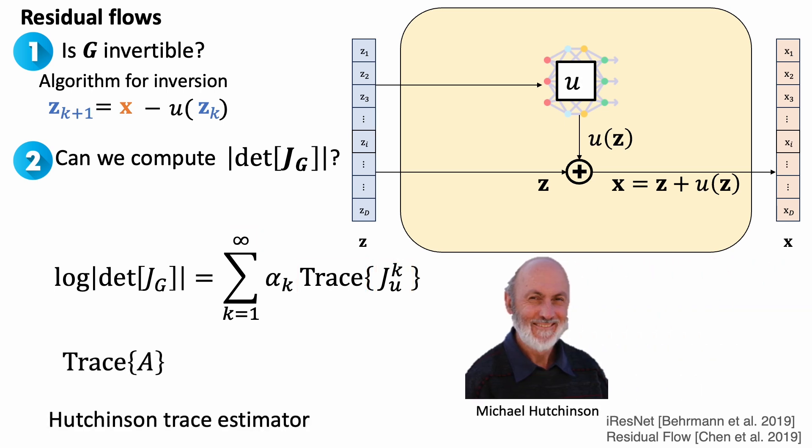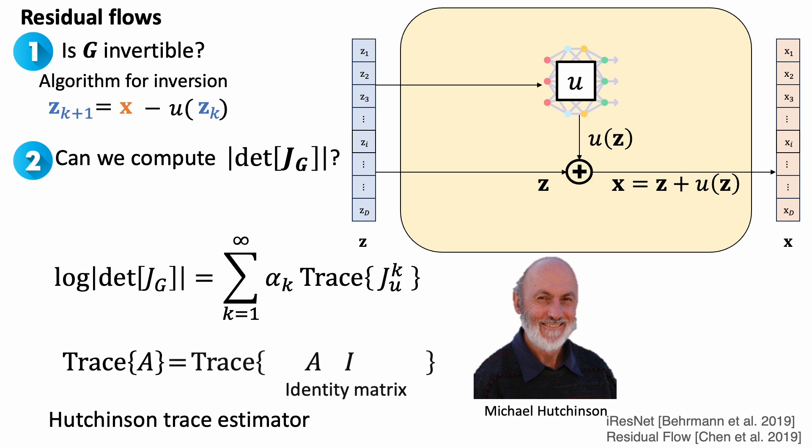Luckily, we can use some tricks to simplify the computation. To estimate the trace of matrix A, we can pretend there is an identity matrix. We can rewrite the identity matrix as the covariance matrix of a random Gaussian vector v with zero means and unit variance. The linearity of expectations allow us to shuffle things around to get this expression. We can now estimate the trace efficiently using Monte Carlo sampling.